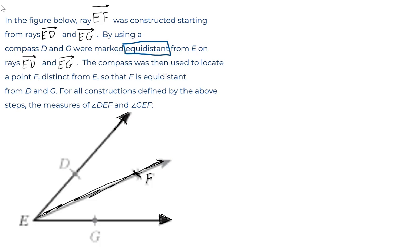By using a compass, D and G were marked equidistant. That means equal distance. So point D and G - here's point D. I'll write this distance in blue here from E to D and from E to G. Same distance, equidistant from point E, both of them.